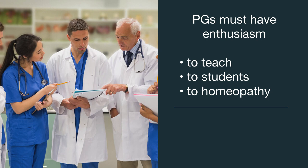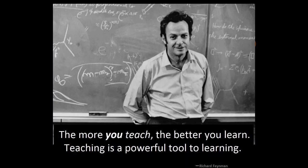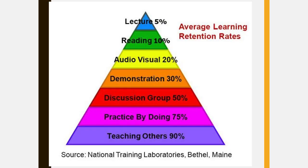One piece of advice for postgraduate students: PG scholars must have enthusiasm to teach, enthusiasm toward students, and enthusiasm toward homeopathy. Then only will you become a successful postgraduate scholar. After BHMS, after postgraduate education, we are directly recruited into the education field without any B.Ed. or M.Ed. course. You have to train during your postgraduation — teach undergraduate students in the clinic, in theory class, and in the IPD. The more you teach, the better you learn. Teaching is a powerful tool for learning.